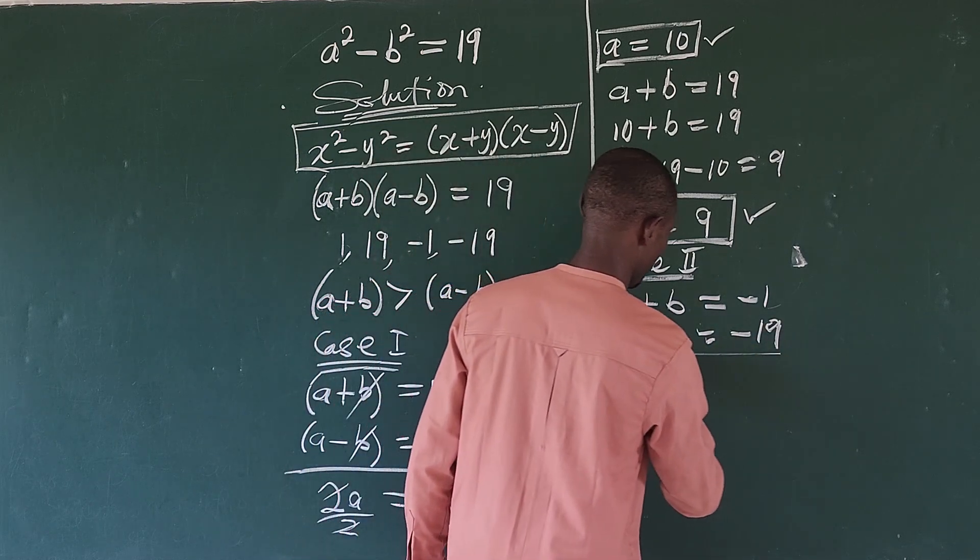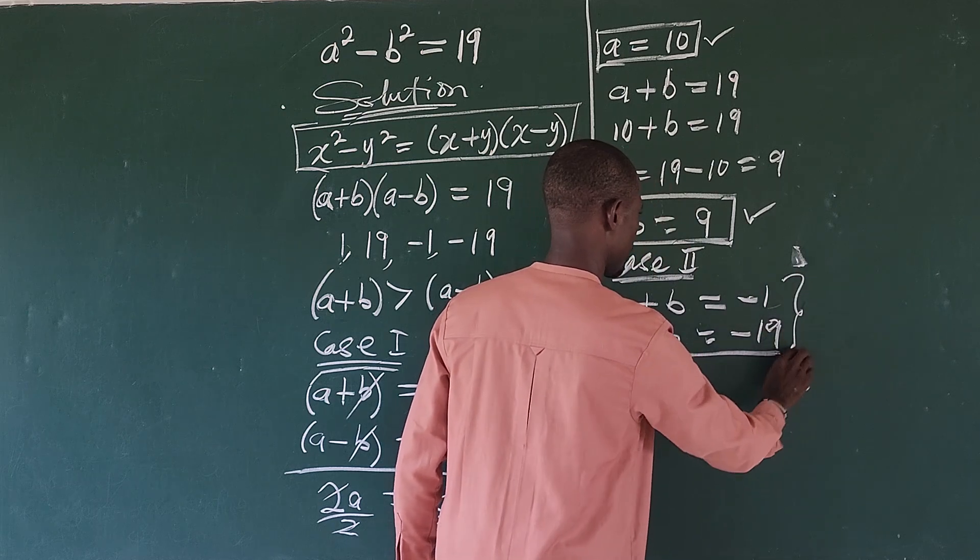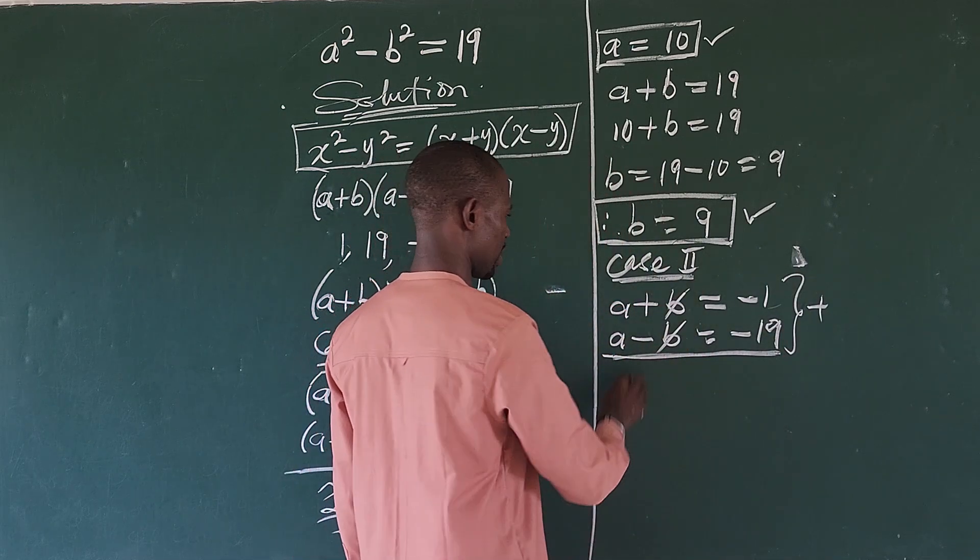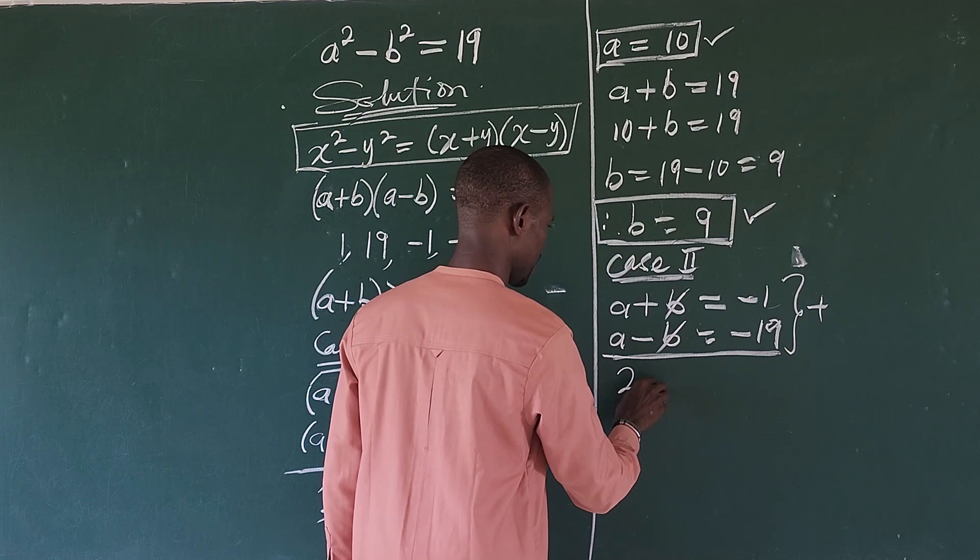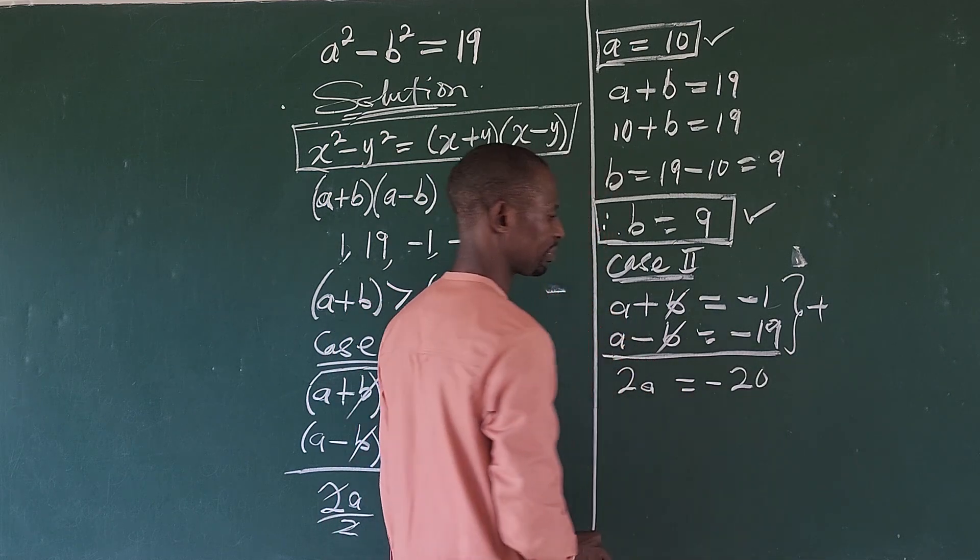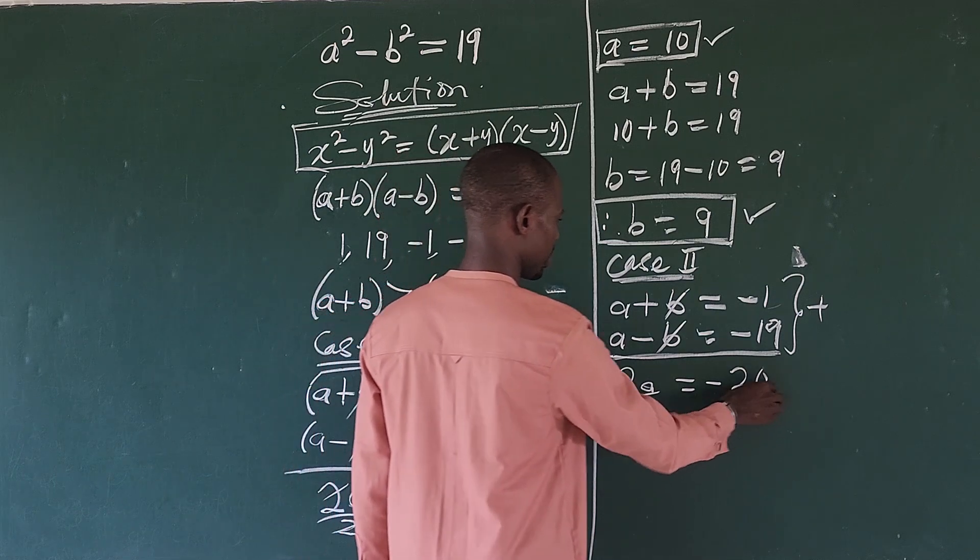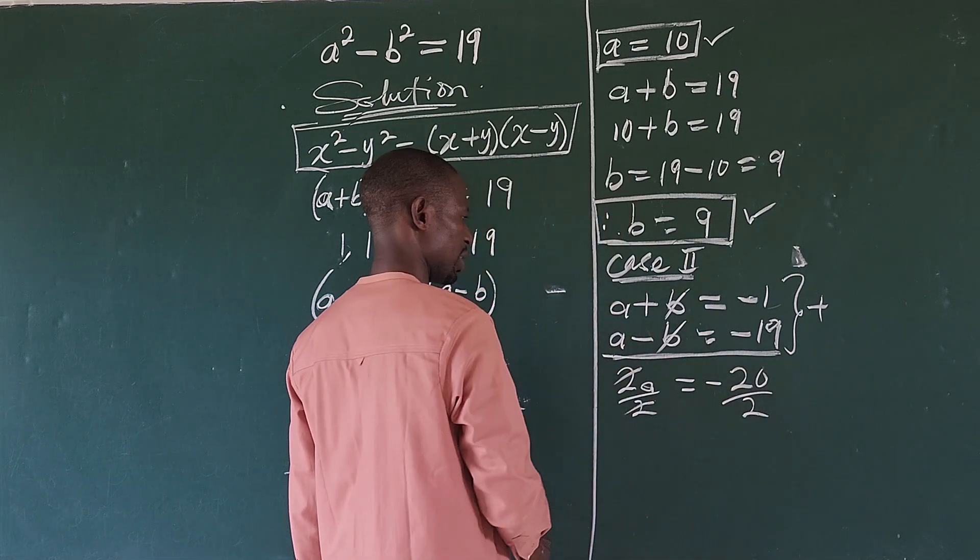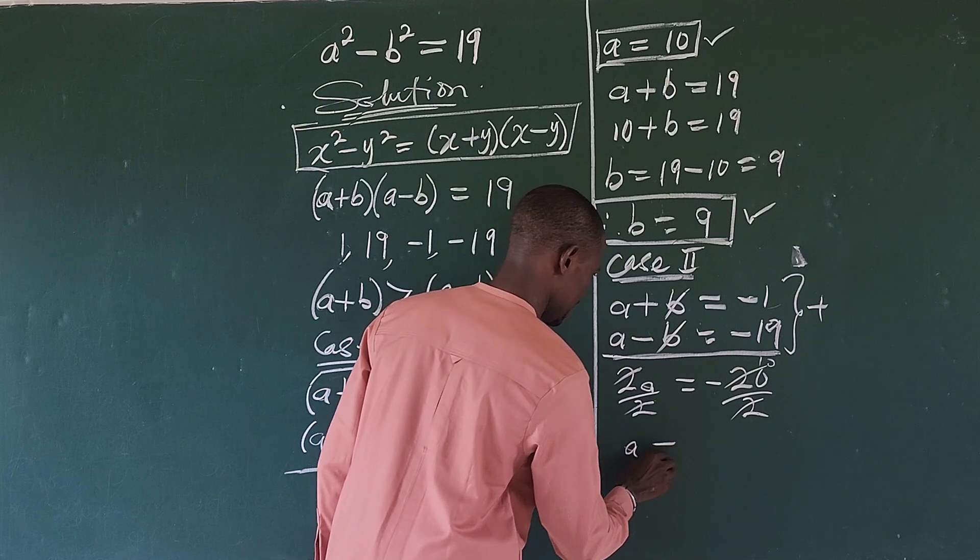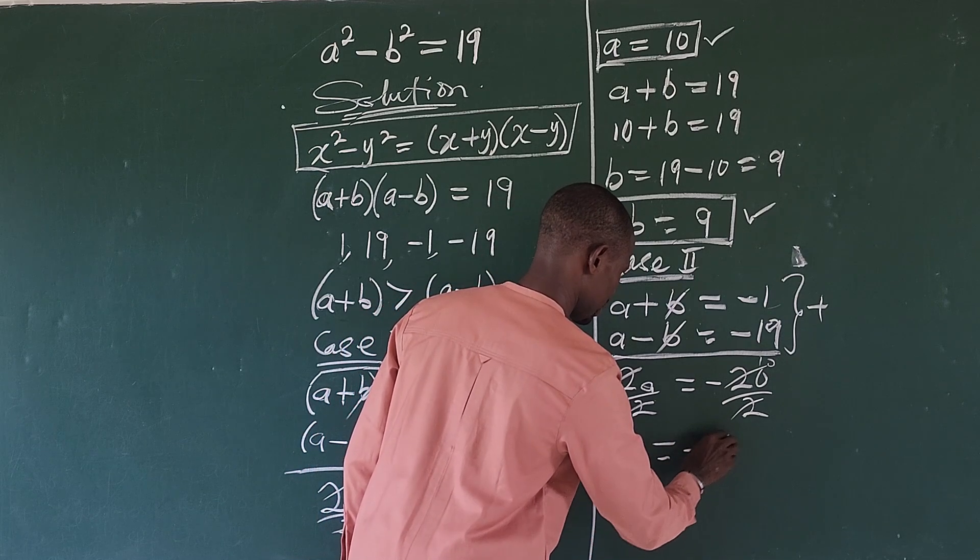Again, we want to add these two equations together. So adding this, this will leave the system. So we have 2a equal to -20. Again, divide by 2. This leaves the system. This will give us -10. So we have a = -10.